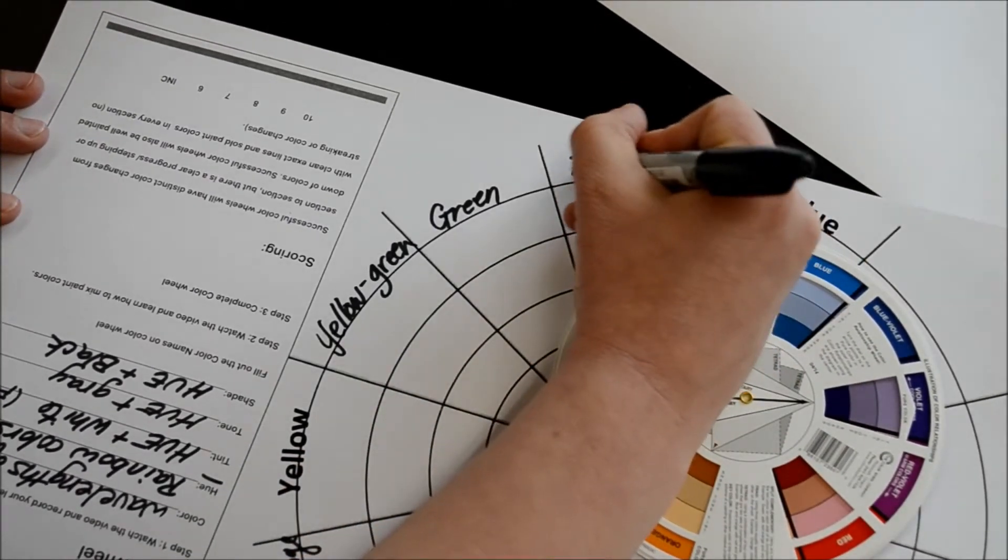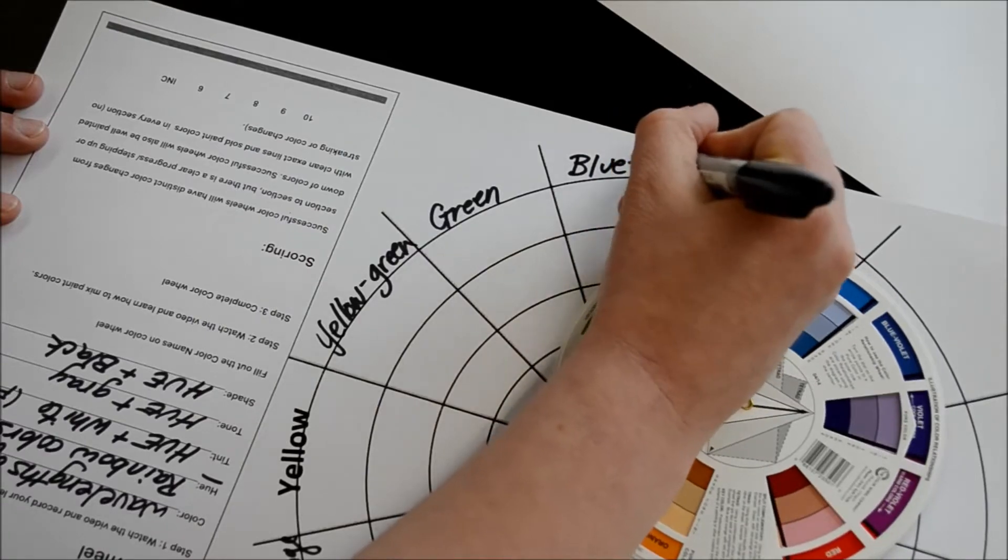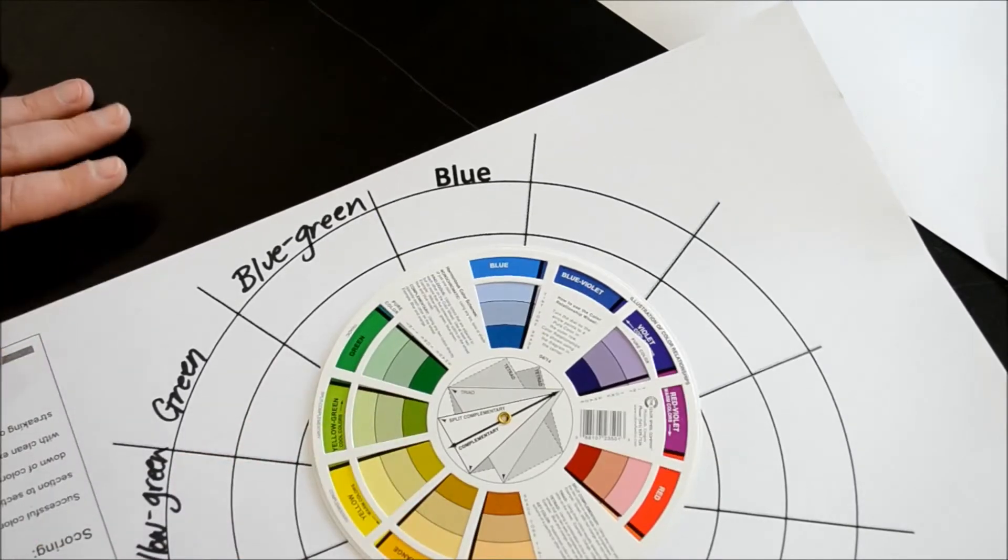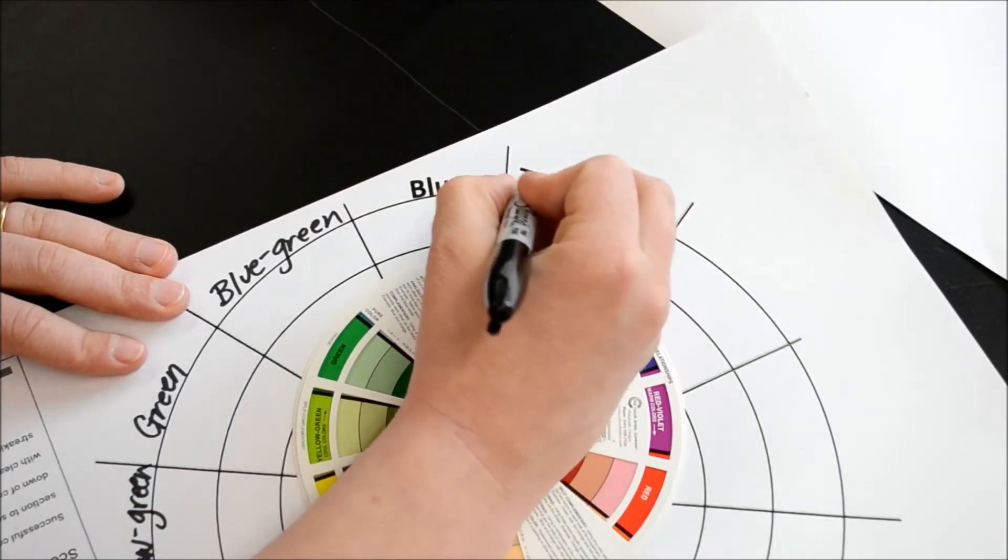After green, listing the primary first, is blue-green. After blue-green is blue, which is already listed for you. Next will come blue-violet.